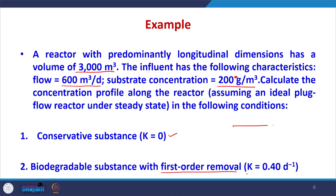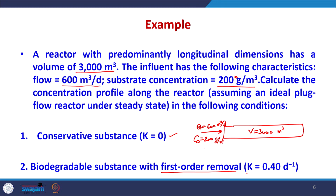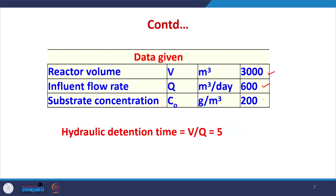We have a long ideal plug flow reactor with volume 3,000 m³. The flow is 600 m³/day with an influent concentration of 200 g/m³ (equivalent to 200 mg/L). We need to find the exit concentration under two conditions: when k = 0 (conservative), and when k = 0.4 per day (biodegradable). The hydraulic detention time T_H = V/Q = 3000/600 = 5 days.